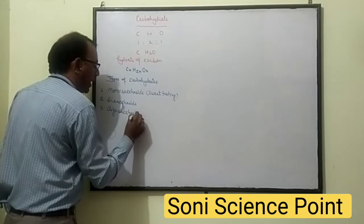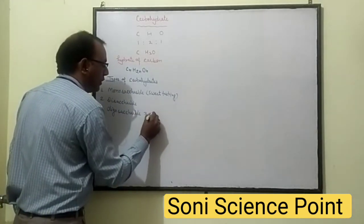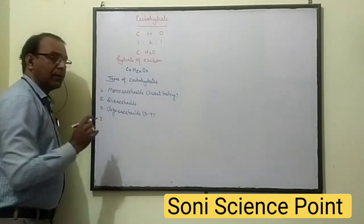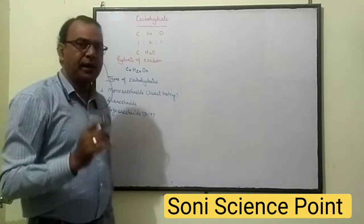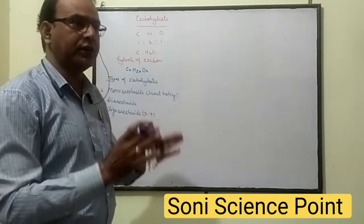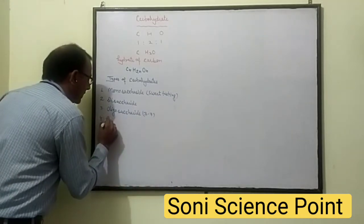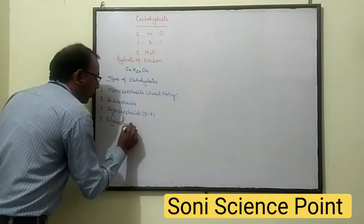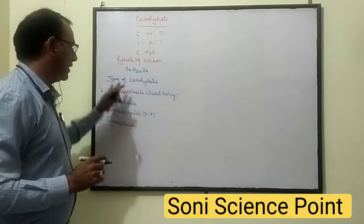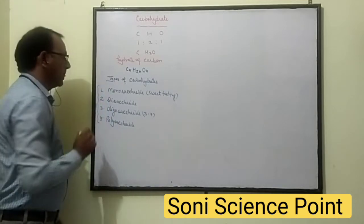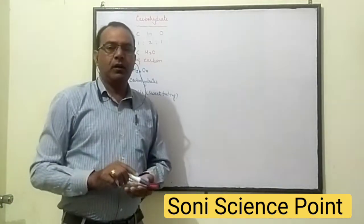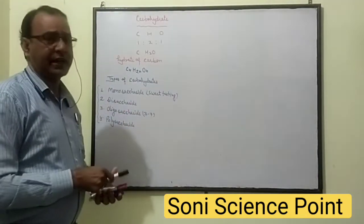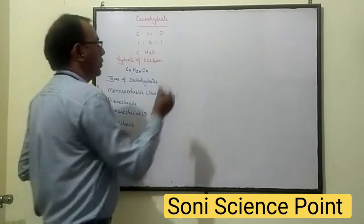Carbohydrates containing three to seven units of Carbon are called Oligosaccharide. Carbohydrates in which thousands of carbon units are present are called Polysaccharide. So, on the basis of different carbon units, there are four types of Carbohydrates: Monosaccharide, Disaccharide, Oligosaccharide (three to seven carbon units), and Polysaccharide.